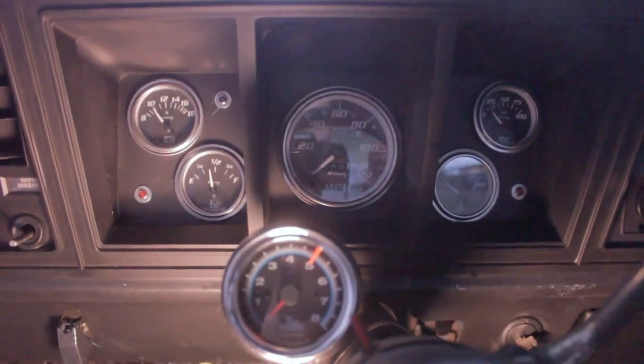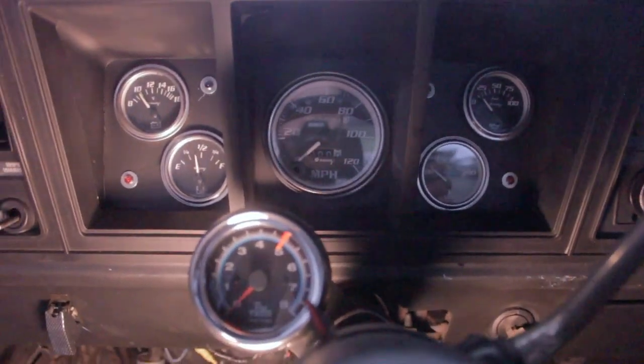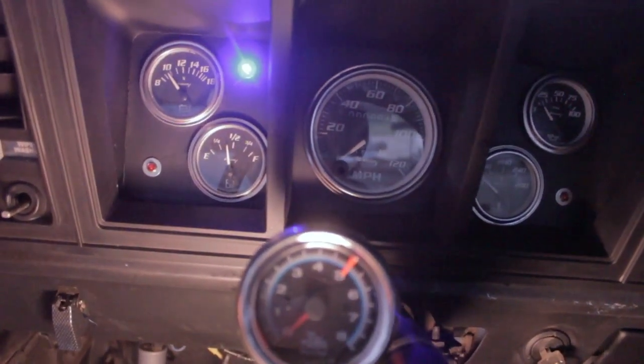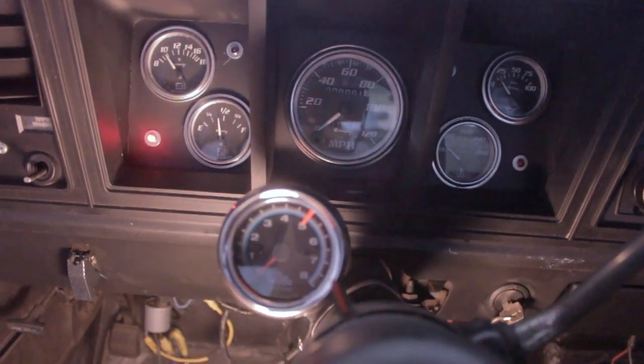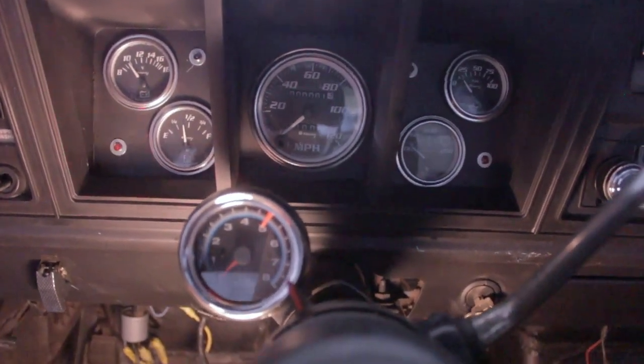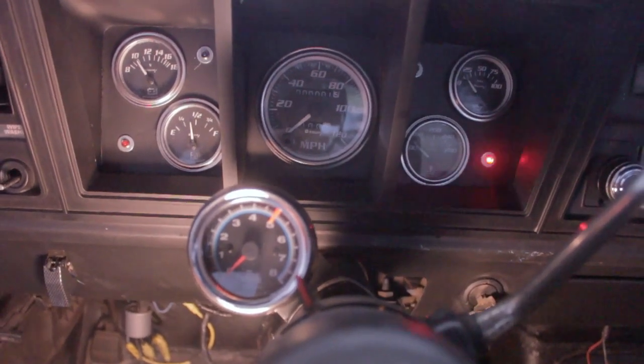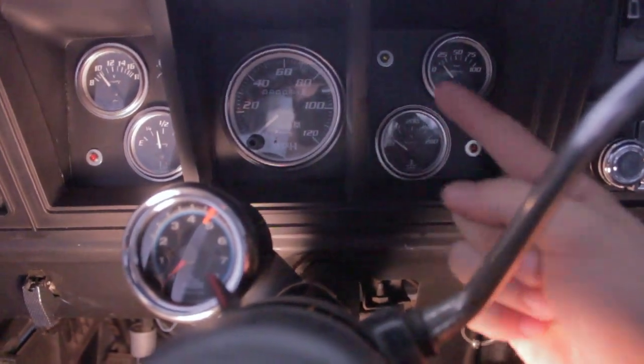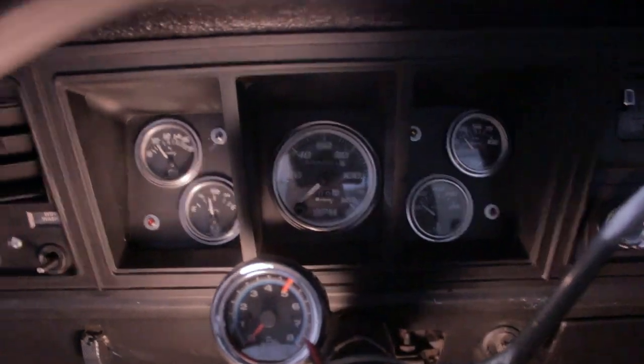So before we start, I'd just like to point out that we have a really bitchin' little LED set up now. If you turn the headlights on and then the high beam, that's my high beam indicator light. And then turn signals, left turn signal, right turn signal, and that's the brake light up there, and the tach mounted here on the steering column.